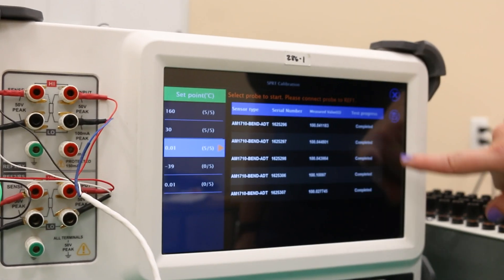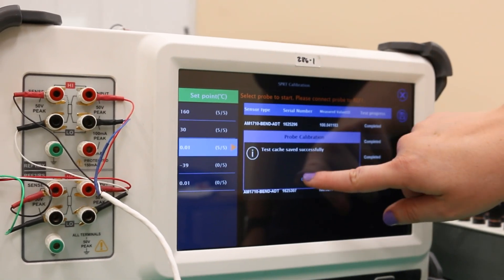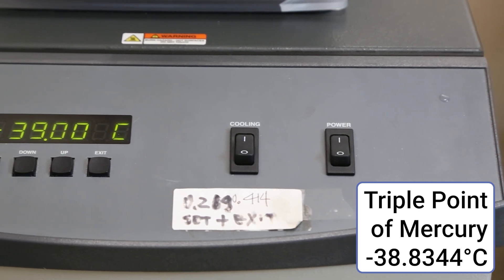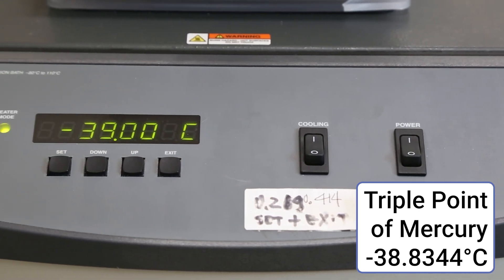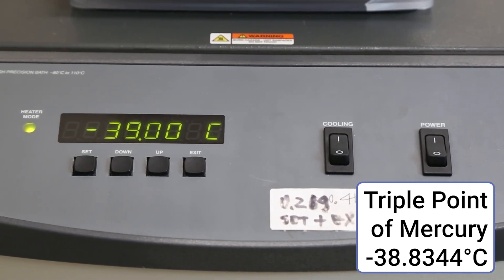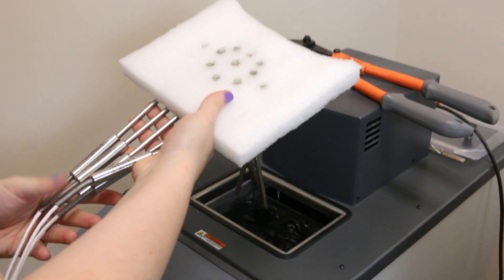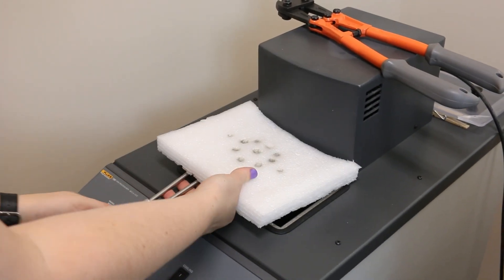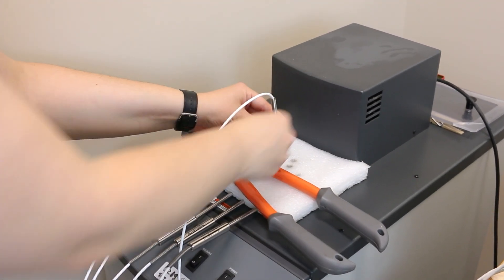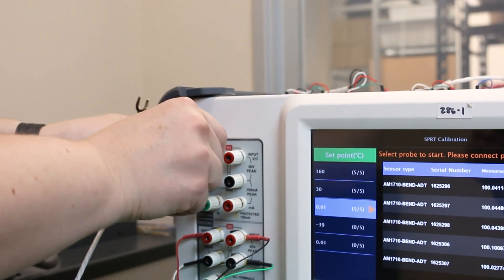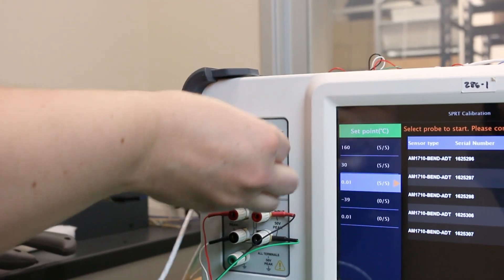After all probes have been measured at the triple point of water, we will move to the triple point of mercury. Instead of a mercury cell, we will use a comparison calibration at negative 39 degrees Celsius. This calibration point will be measured in the same way as the 30 and 160 degree points. Insert all five DUTs and reference probe into the bath and connect them to the five ports on top and REF1 respectively.